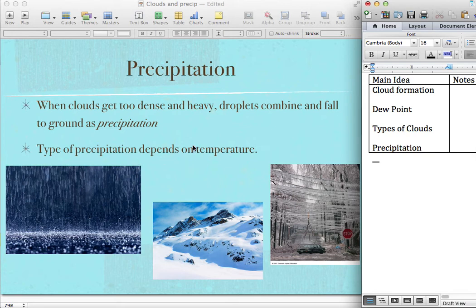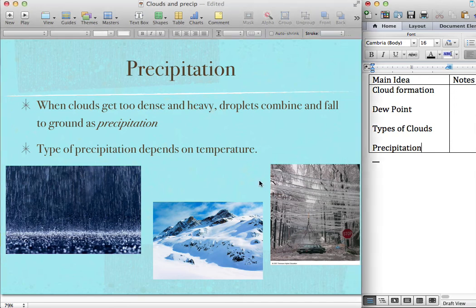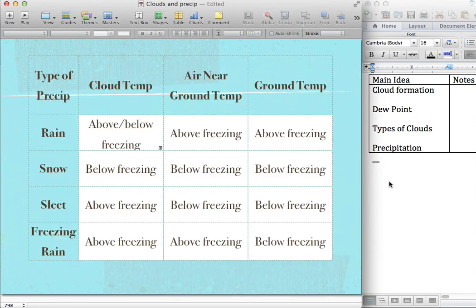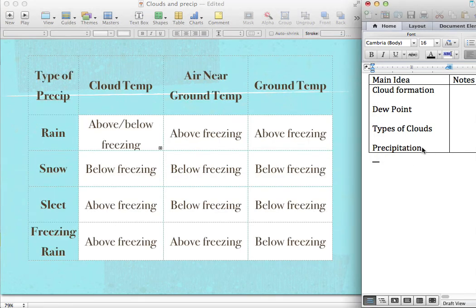The type of precipitation depends on temperature. You have rain, you have snow, you have freezing rain, we can see here we're going to have something called sleet. And the type depends on the temperature in the air, in the clouds, the temperature near the ground, and the temperature on the ground. You're going to want to get this table into your notes. I'm going to explain it quickly, but feel free to pause and copy this table in.